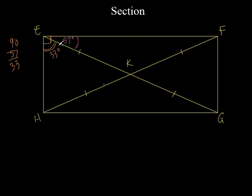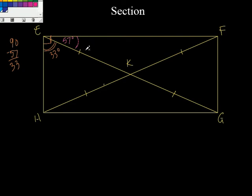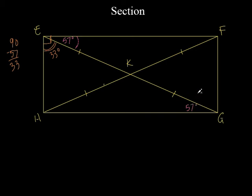That's all there is to it. The math wasn't difficult — it's just knowing to take it away from 90. That's the geometry. Now just for fun, if FEG is 57, what about this angle over here? It's 57 as well — I didn't have to do any math. These two sides are parallel, so they're alternate interior angles. So that angle is also 57.